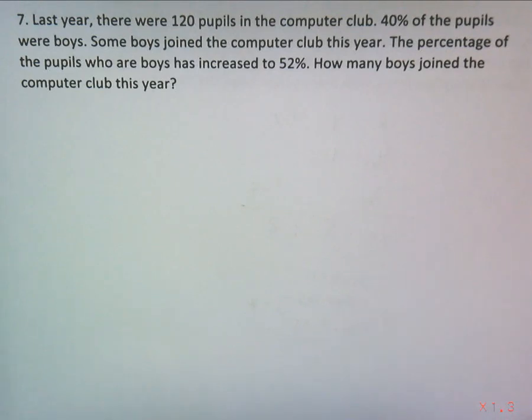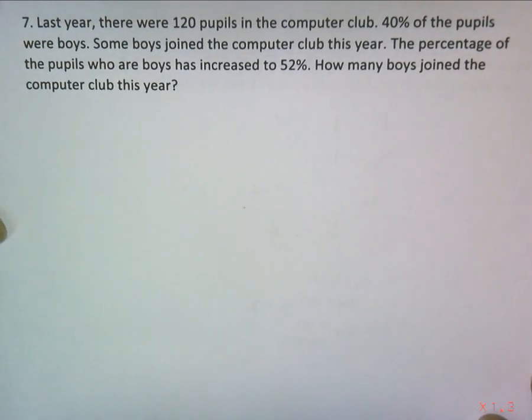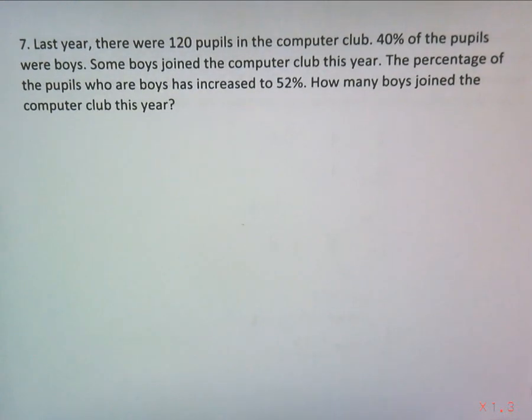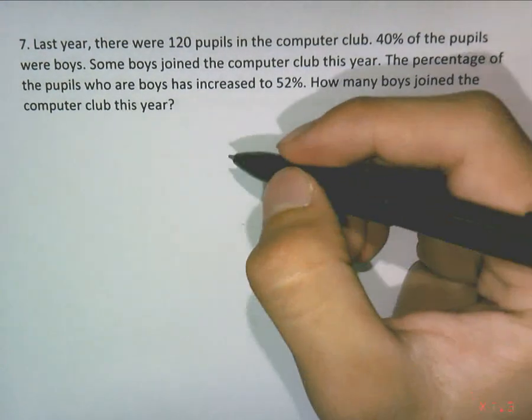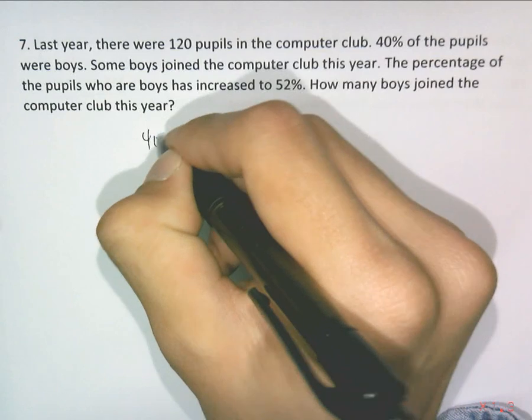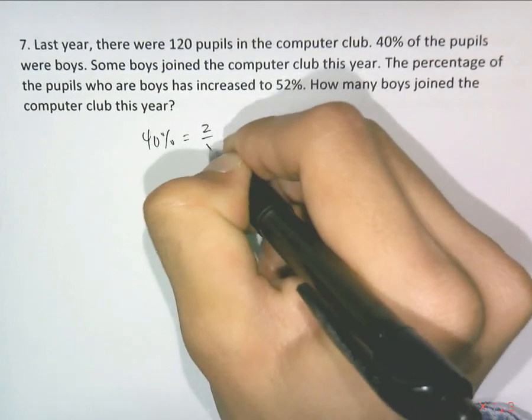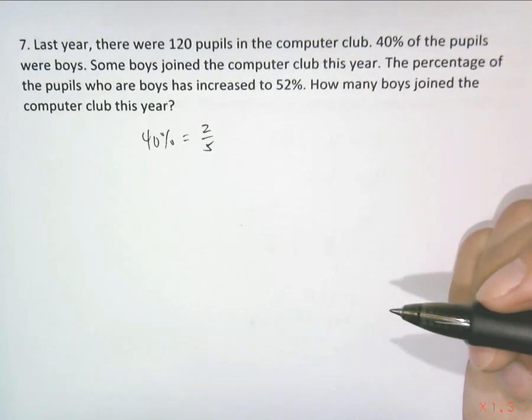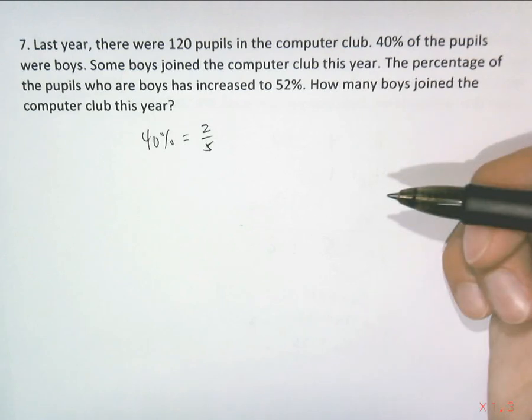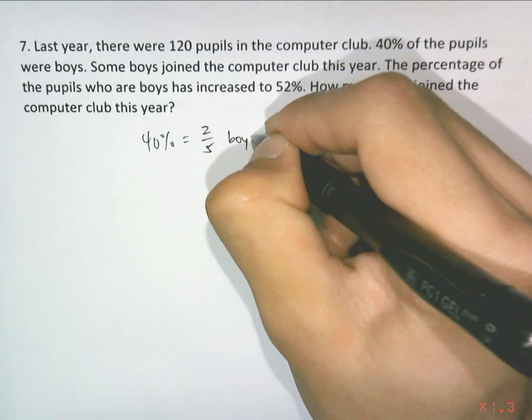120 pupils in the computer club, 40% were boys. We're going to use the ratio approach first, so 40% is 2 out of 5 in simplest form. These were the boys, so the girls must be 3/5.